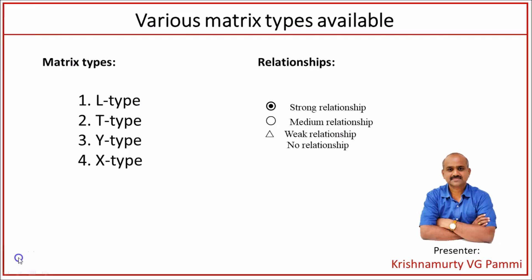There are various matrix types available to show varying relationships between items: strong, medium, weak, and no relationship. In this video, we will cover four types of matrices — L-type matrix, T-type matrix, Y-type matrix, and X-type matrix.